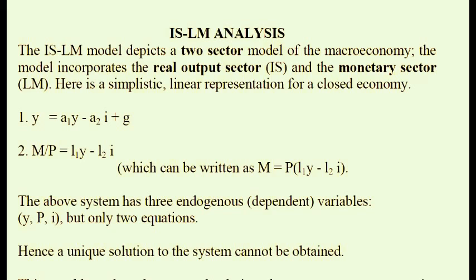There are two unknown variables in this system: output and interest rates, Y and I. There are two policy variables: G, the level of government spending, and M, the level of the money supply. The price level can be an endogenous variable, giving us three endogenous variables in a two-equation system, which cannot be solved uniquely. However, we can make one of these three endogenous variables relatively exogenous to return to a solvable two-equation system.